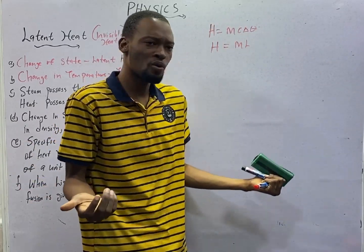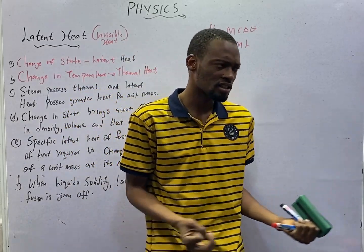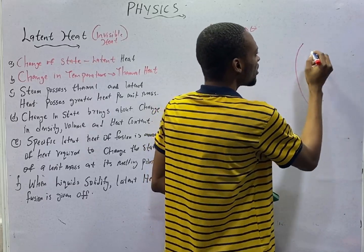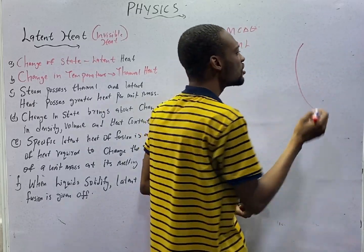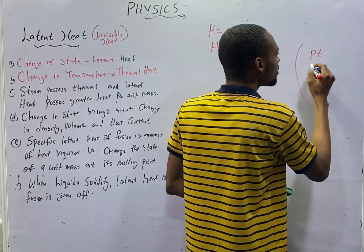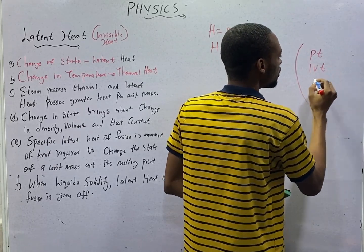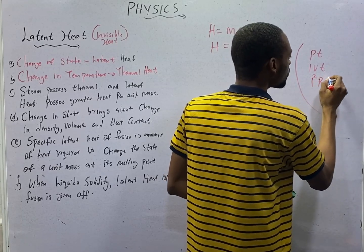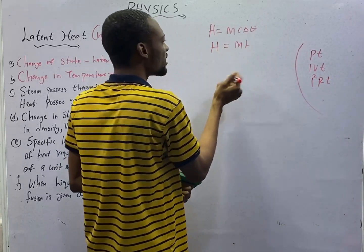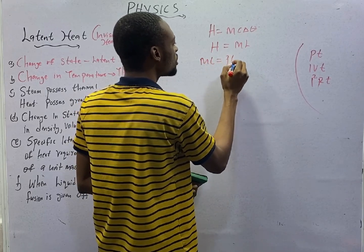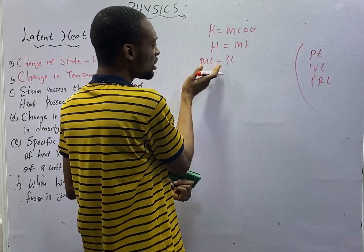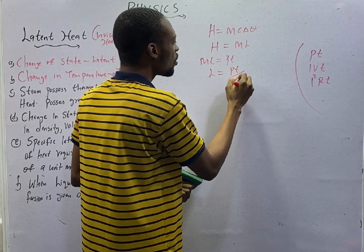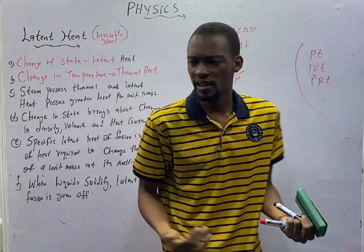The way we answer questions under specific heat capacity and heat capacity is similar to how we answer questions under latent heat. For example, if external energy is applied, we know that electrical energy is power times time, it is also IVT and it is I²RT. So you can equate here — you can say mL equals VT. From here you can find your specific latent heat or whatever you are looking for.